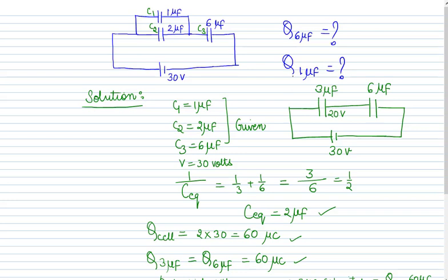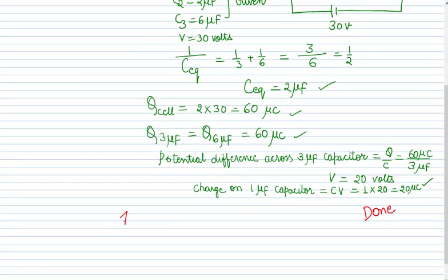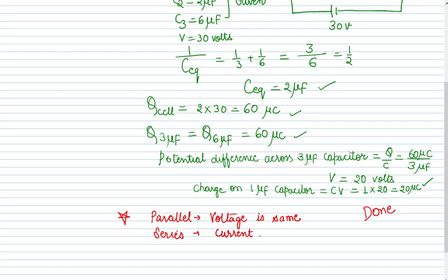This numerical is done. Key points: when capacitors are in parallel, voltage is the same across each; when in series, charge is the same through each. Using these two principles, we solved for the charge on the 6 microfarad capacitor (60 microcoulombs) and the 1 microfarad capacitor (20 microcoulombs).